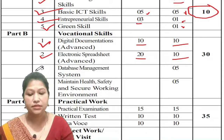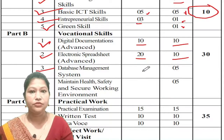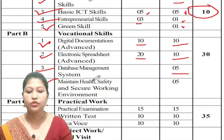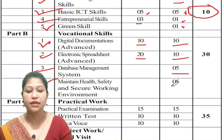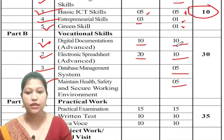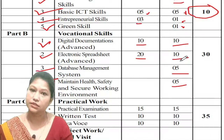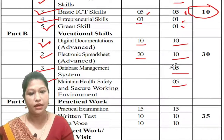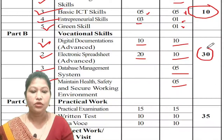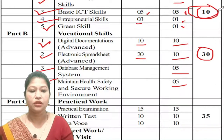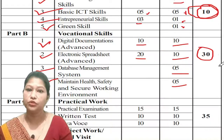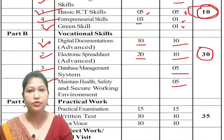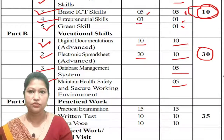Unit number 3 is Database Management System. Unit number 4 is Maintain Health, Safety and Secure Working Environment — for the half-year it is not included, and the annual exam is also not at the HSLC level. The total theory marks are 30 marks for the half-year and 10 marks for the annual exam, with 10 marks for theory in the HSLC exam.